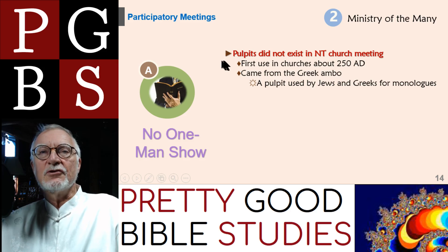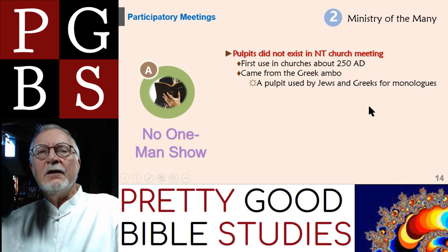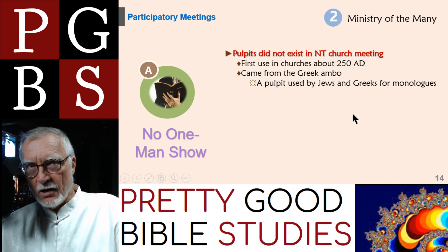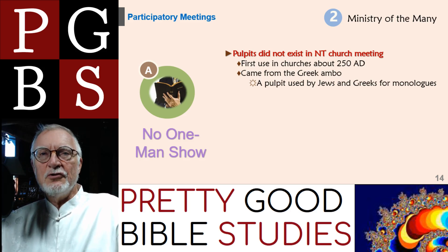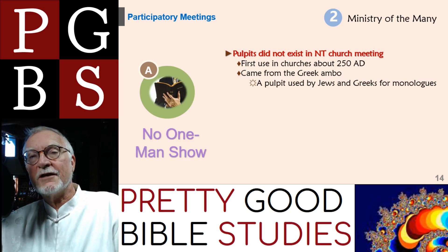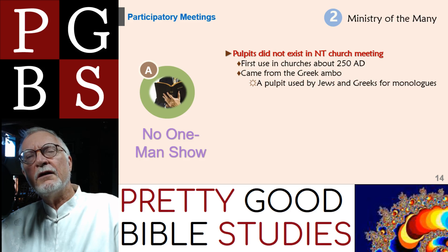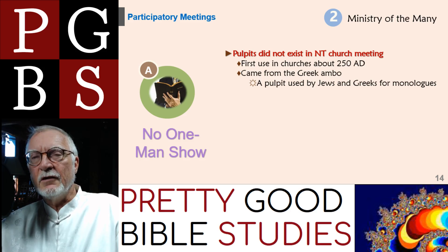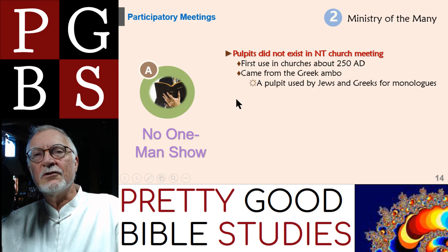Another thing that did not exist: pulpits. Pulpits did not exist in the New Testament church meeting. They were first used in churches around 250 A.D., coming from the Greek ambo — a pulpit used by Jews and Greeks for monologues. We don't have monologues in the New Testament, so we don't need a pulpit. If you want a great book showing where all this stuff comes from — how pagan practices were imported into the church and we think it's Christian when it's actually traditional and often pagan — I'd suggest Frank Viola's book, Pagan Christianity.